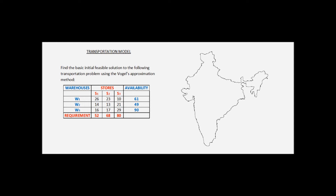Find the basic initial feasible solution to the following transportation problem using Vogel's approximation method. A company in India has three warehouses W1, W2, and W3 and three stores S1, S2, and S3. The warehouses have supply availability of 61, 49, and 90 units respectively, while the stores have a demand of 52, 68, and 80 units respectively. The demand at the stores needs to be fulfilled by the supply available at the warehouses.